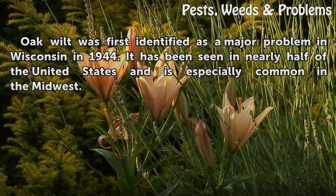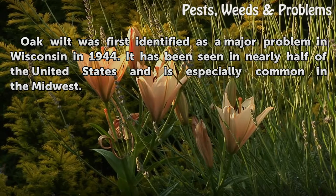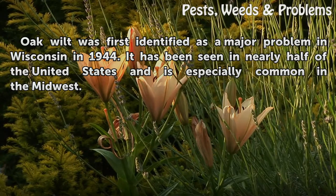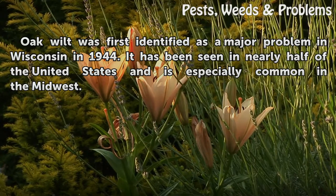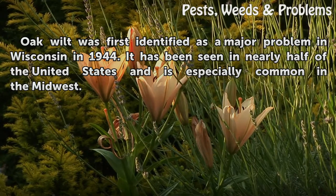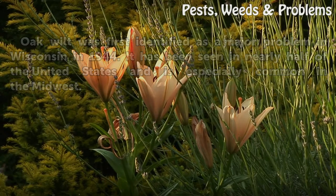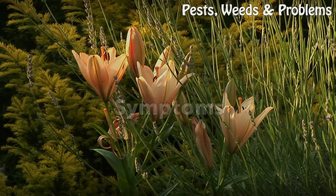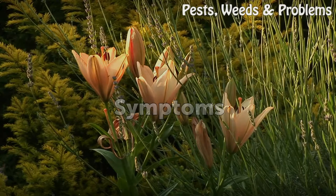Oak wilt was first identified as a major problem in Wisconsin in 1944. It has been seen in nearly half of the United States and is especially common in the Midwest.